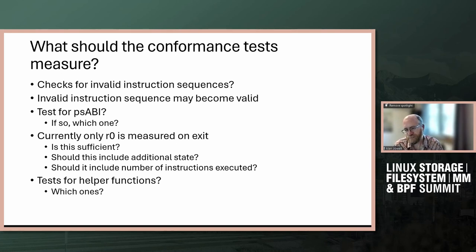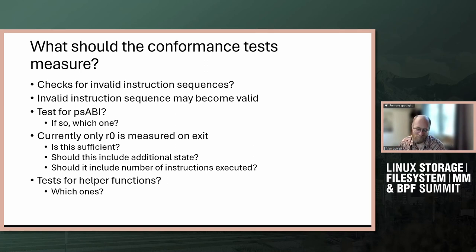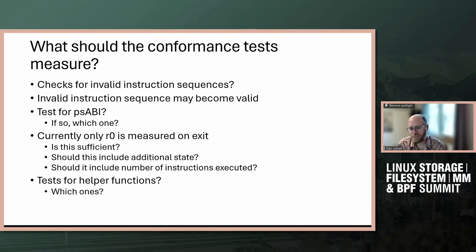The most common case likely to happen across multiple runtimes — RBPF, offload cards, etc. — is where you have multiple instructions per opcode. If an implementation processes the opcode without looking at the offset or source register fields, they're doing the wrong thing because the ISA constrains that. Like the legacy packet instructions that were narrowed to just what was in use so we wouldn't squat on the space. How do you know if somebody implemented that whole opcode in their offload card? I'd love to be able to test that, but I can't think of a way right now.